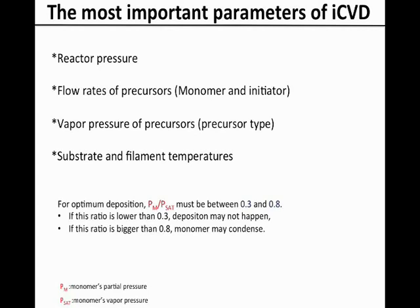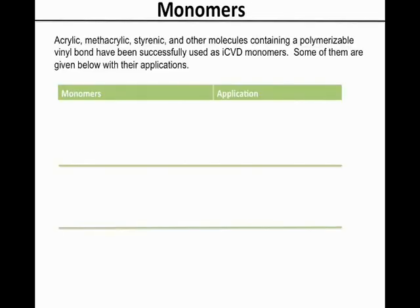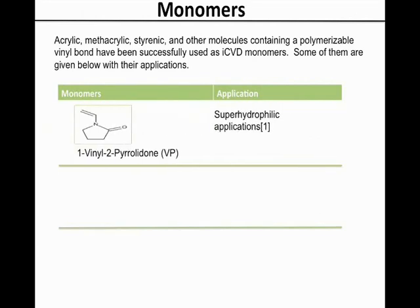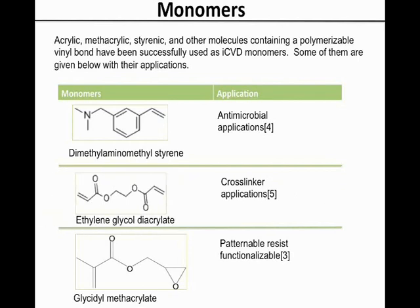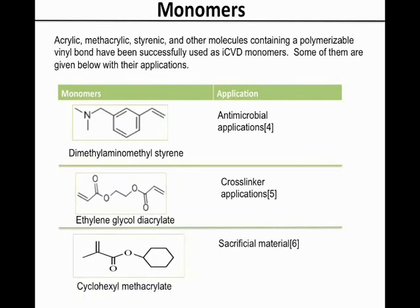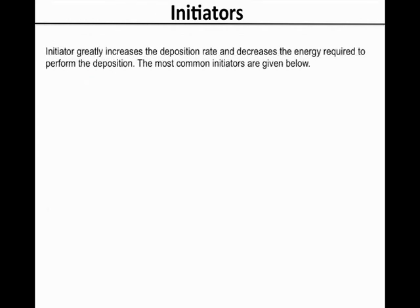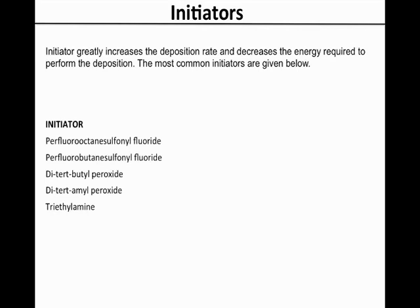Deposition rate and the morphology of the deposits are mostly affected by the PM/PSAT ratio. While PM is determined by reactor pressure and the flow rate of the monomer, PSAT is determined by the precursor type and the substrate temperature. Acrylic, methacrylic, styrenic, and other molecules containing a polymerisable vinyl bond have been successfully used as iCVD monomers, some of which are shown with their applications in this slide. An enteric coating is a polymeric barrier coating that protects drugs from acids within the body. Initiators greatly increase the deposition rate and decrease the energy required to perform the deposition, and the most common initiators are given in this slide.